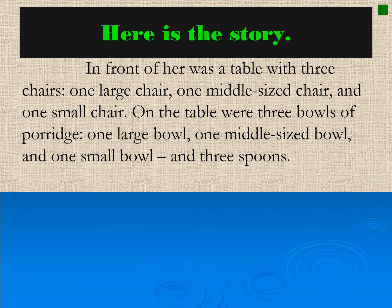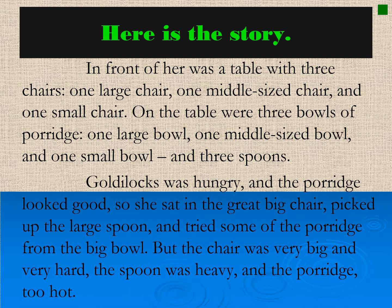In front of her was a table with three chairs — one large chair, one middle-sized chair, and one small chair. On the table were three bowls of porridge — one large bowl, one middle-sized bowl, and one small bowl — and three spoons. Goldilocks was so hungry and the porridge looked good, so she sat in the great big chair, picked up the large spoon, and tried some of the porridge from the big bowl. But the chair was very big and very hard, the spoon was heavy, and the porridge too hot.